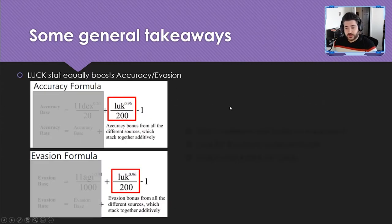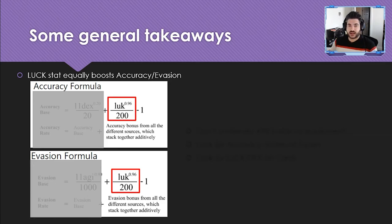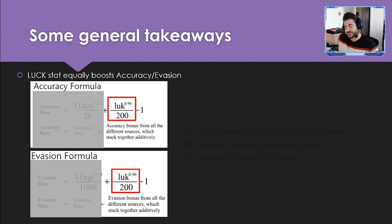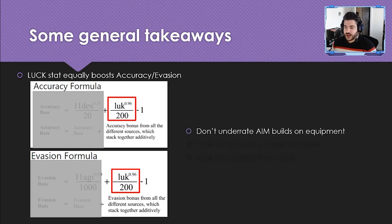Key takeaways: luck equally boosts both accuracy and evasion at the same ratio. In both formulas, the luck portion is literally identical. This is why countering an evade comp with another evade comp works — any evasion gained from luck is matched by the same amount of accuracy from luck, since it's directly proportional in both formulas, assuming both parties have maxed Secrets of the Heart.